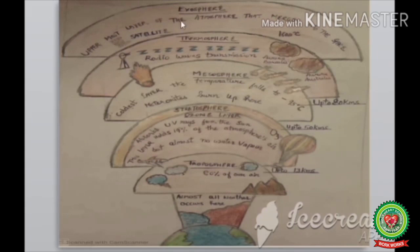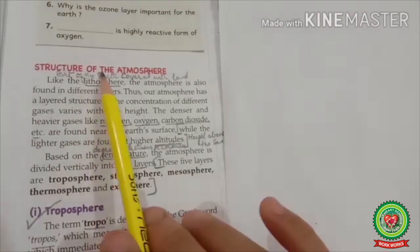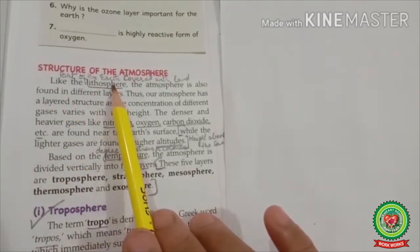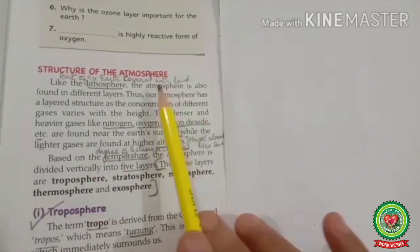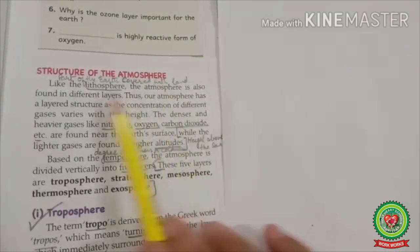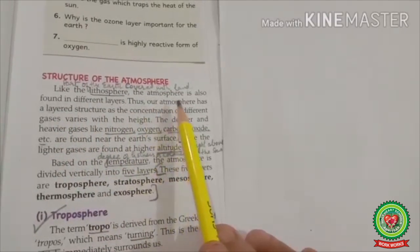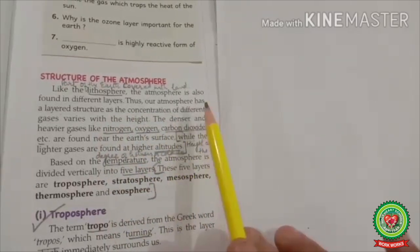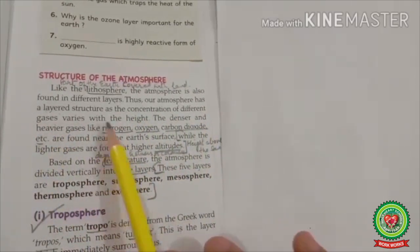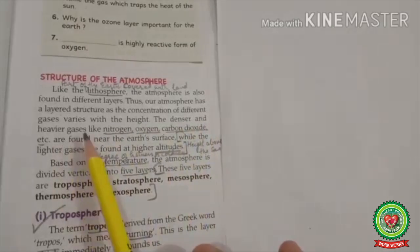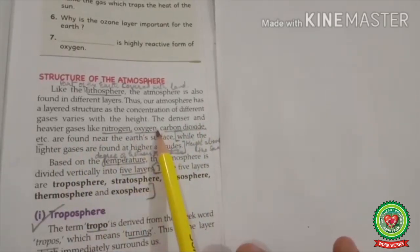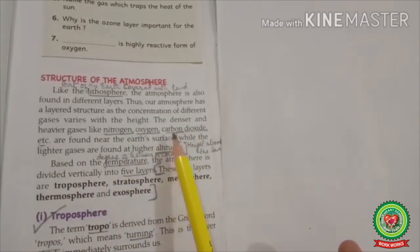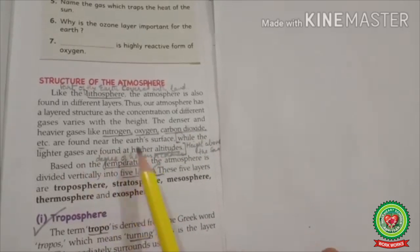Let's read about the structure of the atmosphere. Like the lithosphere — the part of the earth covered with land — the atmosphere is also found in different layers. Our atmosphere has a layered structure because the concentration of different gases varies with height. The denser and heavier gases like nitrogen, oxygen, and carbon dioxide are found near the earth's surface, while lighter gases are found at higher altitudes.